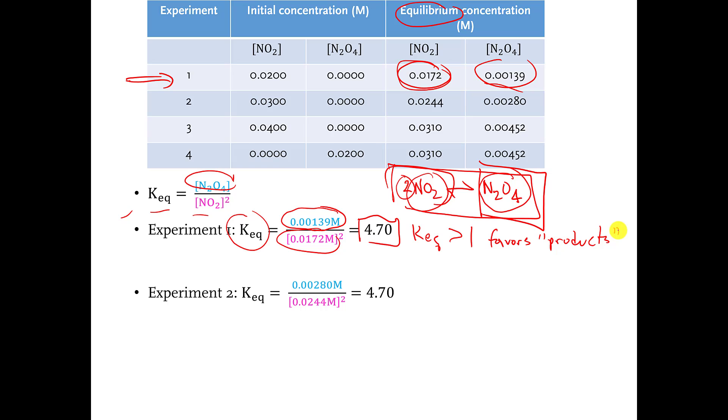Now we can do the same thing with experiment 2. We have different equilibrium concentrations in experiment 2. So we're going to take this number, 0.00280 molar, that's going to go in the numerator, and 0.0244 molar is going to go in the denominator, and we're going to square it. And if we do this calculation out, look at this. The equilibrium constant that we get is identical to the equilibrium constant that we got in the first experiment. And this is not a coincidence.